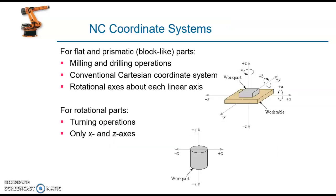Here we are discussing the NC coordinate system. We commonly use two types of NC coordinate systems. One is applicable to milling machines while machining flat and prismatic parts. In a milling machine, we have basically three axes.